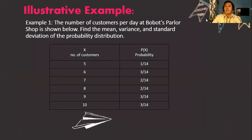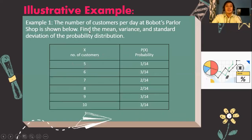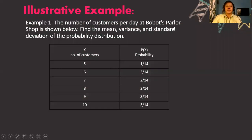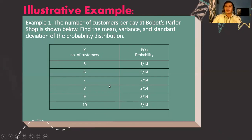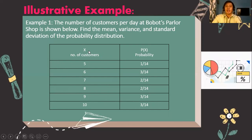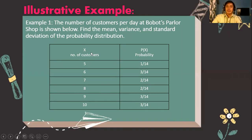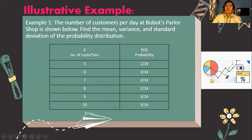Now let's have an illustrative example. The number of customers per day at Bobot's shop is shown below. We need to find the mean, variance, and standard deviation of the probability distribution. The random variable x represents the number of customers per day: 5, 6, 7, 8, 9, and 10, with corresponding probabilities 1/14, 3/14, 2/14, 2/14, 3/14, and 3/14 respectively.